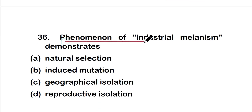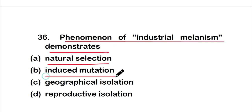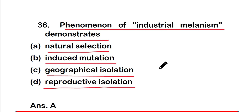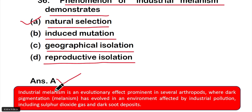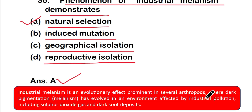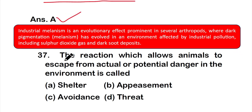Question number 36: The phenomenon of industrial melanism demonstrates — option A: natural selection, option B: induced mutation, option C: geographical isolation, or option D: reproductive isolation. The correct answer is option A — natural selection. Industrial melanism is an evolutionary effect in several arthropods where dark pigmentation has evolved in environments affected by industrial pollution, including sulfur dioxide gas and dark soot deposits.